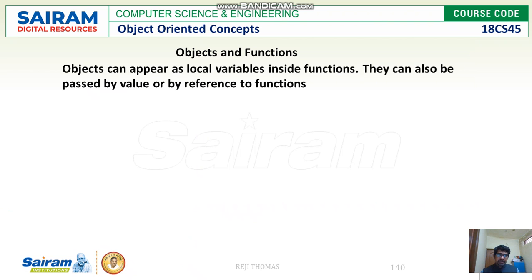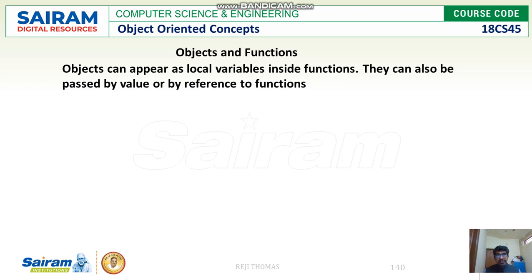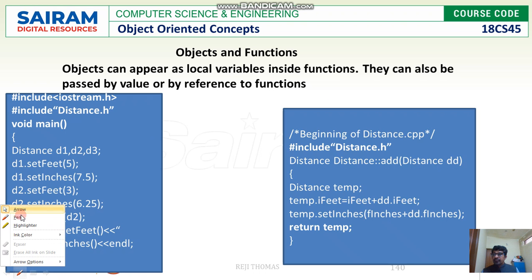Next is objects and functions. Objects are nothing but variables — class variables. In all the places where we can use a variable, we can use an object as well. They can appear as local variables, they can be passed by value, or they can be passed by reference. Let me repeat: objects are nothing but class variables. In all the places we normally use a variable, we can use objects, because basically objects are variables.